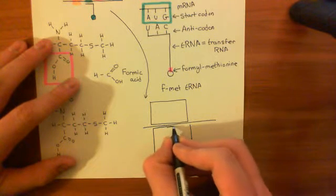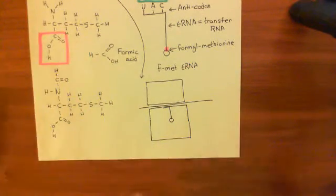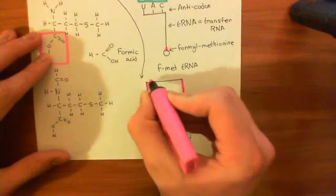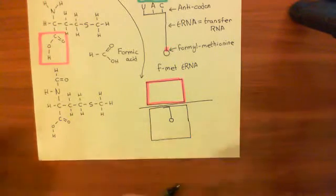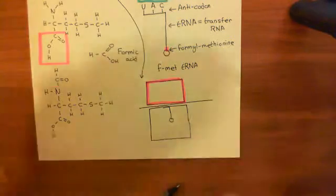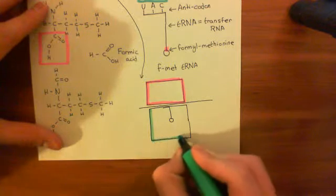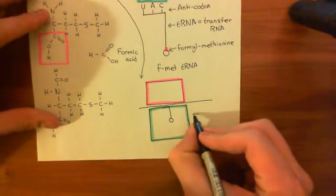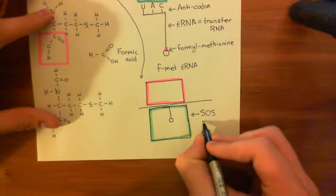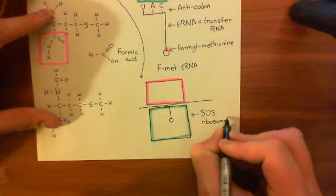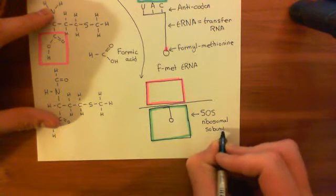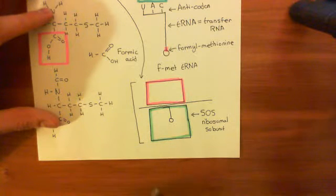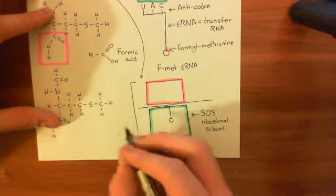Here is the 50S ribosomal subunit. We have pink denoting the 30S ribosomal subunit, and we'll use green for the 50S subunit. This new subunit that has come and joined on is the 50S ribosomal subunit. They have combined together to make what's now known as the 70S ribosomal subunit. Of course, 50 and 30 don't add up because they're not just mass — they are a more complicated measure of size.